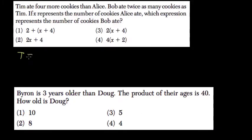So the amount of cookies that Tim ate equals whatever Alice ate plus 4. Bob ate twice as many cookies as Tim. So whatever the amount Bob ate, you have to multiply Tim's amount by twice.